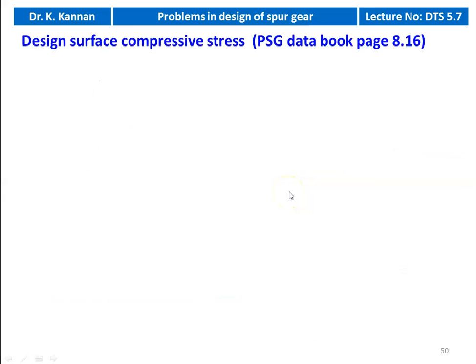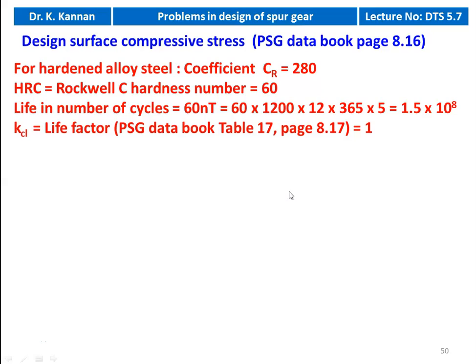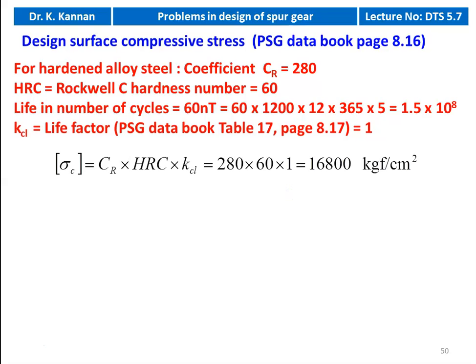Then, desired compressive stress — the equation is available on page number 8.16. For hardened alloy steel, coefficient Cr equals 280 and Rockwell C hardness number is 60. Life in number of cycles: 60 into 1200 into 12 hours into 365 days into 5 years equals 1.5×10^8. Life factor KCL is 1 for life greater than 10^7. Design compressive stress [sigma_c] equals Cr × HRC × KCL = 280 × 60 × 1 = 16,800 kilogram force per centimeter square.